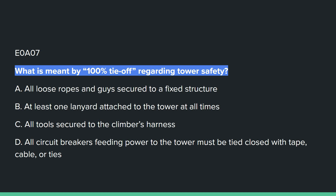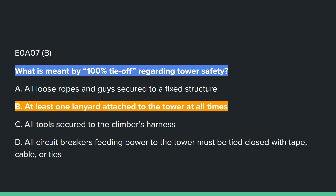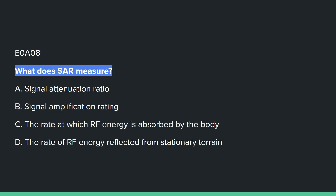E0A07: What is meant by 100% tie-off regarding tower safety? B — at least one lanyard attached to the tower at all times.